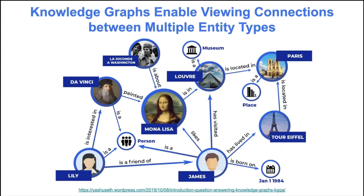Knowledge graphs enable viewing connections between multiple entity types. You can see connections between people, paintings, the Louvre — how different nodes are related. You can make sense of different entity types: a person, a painting, and how they are connected based on edges. You can extend that in a biological lens by looking at how a gene is connected with a drug, and how that drug is connected with a disease, tissue, or other biological and biomedical entities.